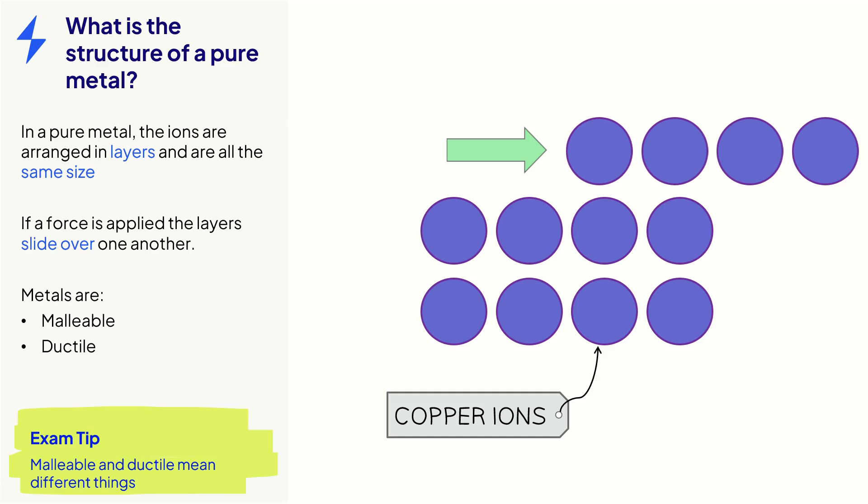Malleable means the metal can be hammered into shape, and ductile means the metal can be drawn out into a wire.